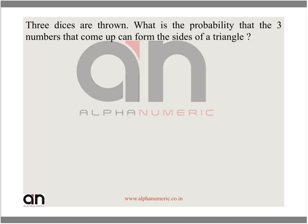Three dice are shown. What is the probability that the three numbers that come up can form the sides of a triangle? Let us say that when the three dice are thrown, the numbers shown are x, y, and z. So these are the three numbers shown on the dice.